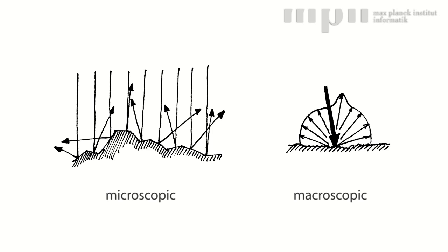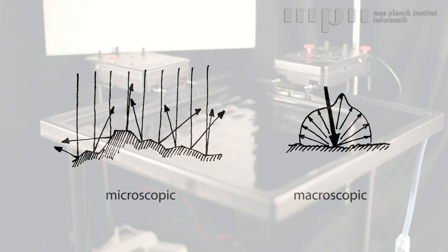Our devices shape microfacet distributions by exciting waves on a liquid surface in a controlled way. The impression of reflectance is achieved through temporal averaging of the travelling waves.